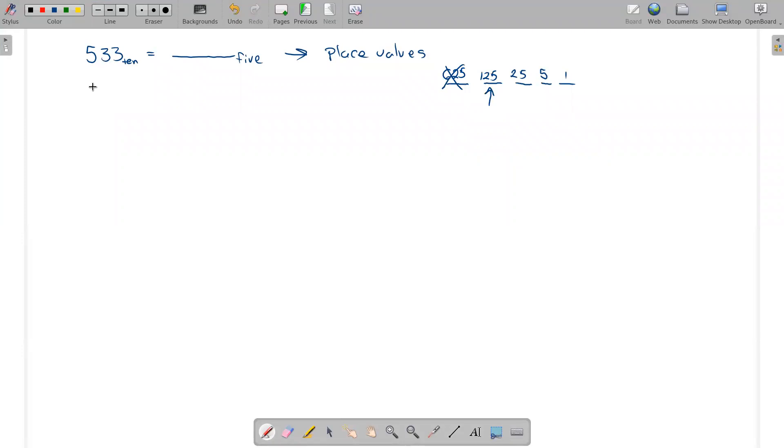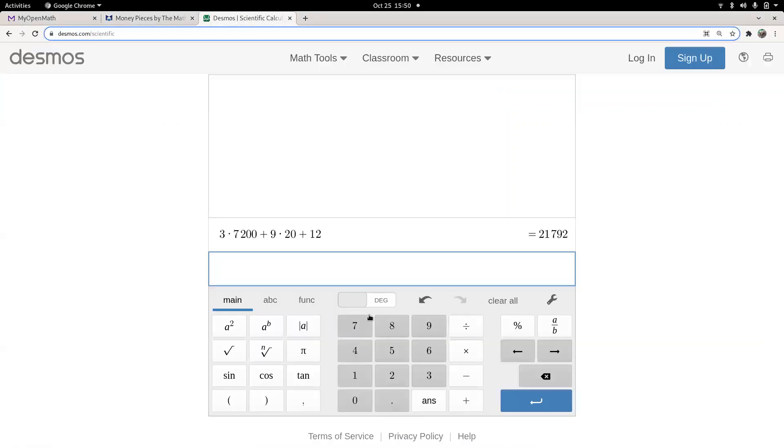So now it's kind of like counting back change. I owe somebody 533, and I have bills worth 125, 25, 5, and 1. I'm going to give them as many of this big bill as I can. So how many groups of 125 are in 533? Well, I'm going to check that on a calculator. There's three or four. So I want to take 533 and say, how many 125s are in there? Okay, so there's four of them.